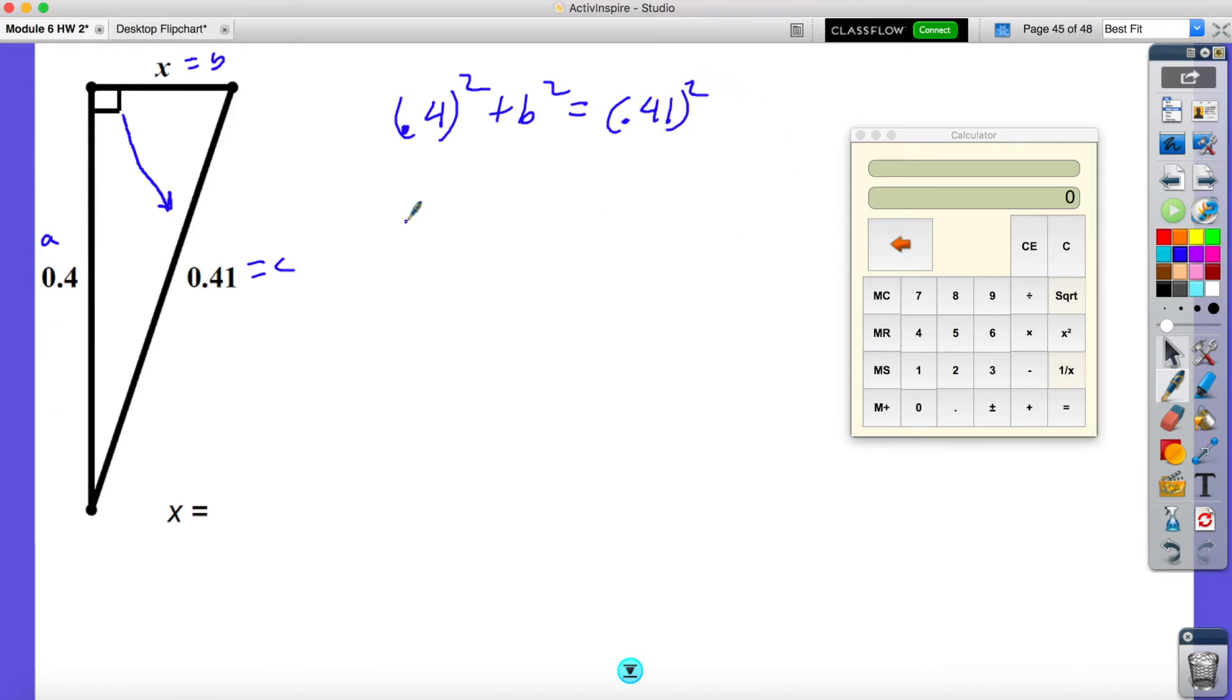So when I do this, I'm going to get 0.16 plus B squared is equal to, and let me put 0.41 into my calculator really quickly, 1681. So then all I'm going to do is subtract 1.16 on both sides.